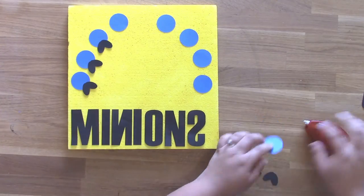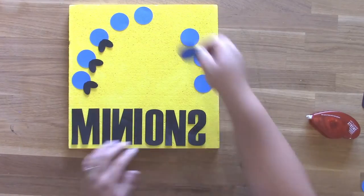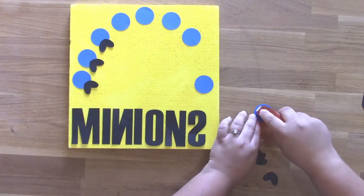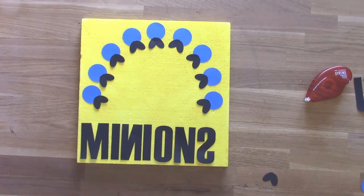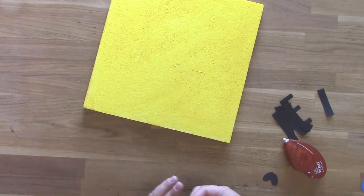I'm using the Tombow Extreme Adhesive Runner to add those little feet to my little Minion setup here. And the trick with that runner is that you do want to kind of snap your hand to the side to break the adhesive as you are running it along.